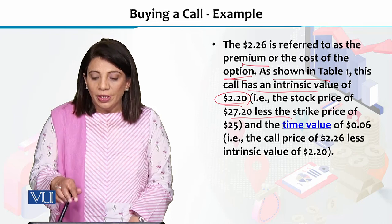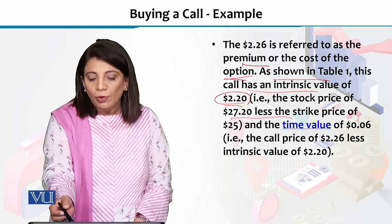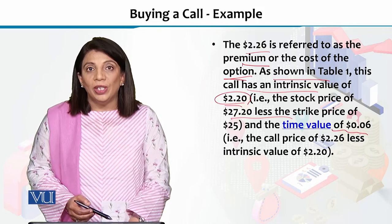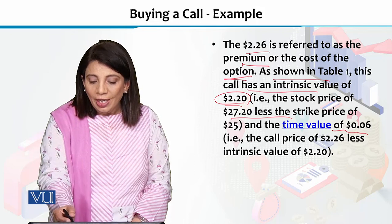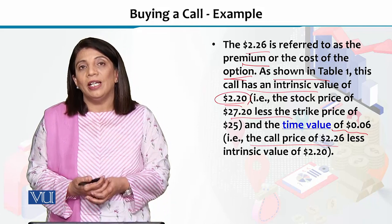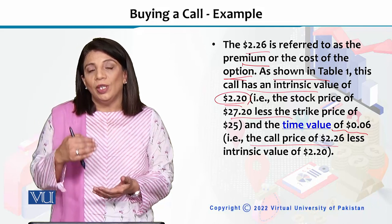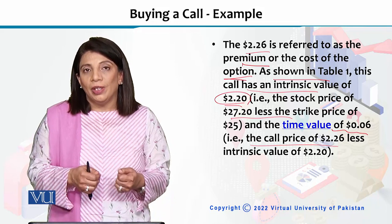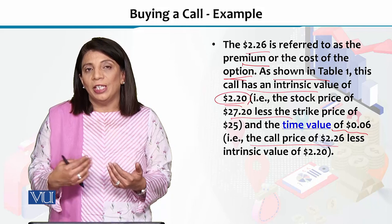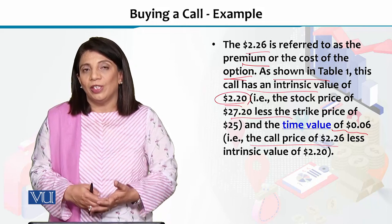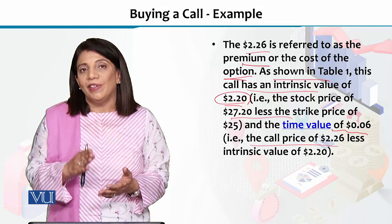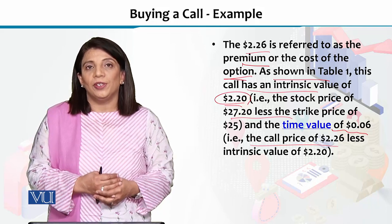When we pay 2.26 as the premium or the cost, we need to take into account the time value of 0.06 dollars also. آپ کی call price 2.26 میں سے intrinsic value subtract کر کے آپ کو مدِ نظر رکھنا پڑے گا کہ کتنی کیمت مزید آگے جائے گی تبھی profit ملے گا۔ آپ کو time value of money بھی consider کرنا پڑے گا — alternatives دیکھنے پڑتے ہیں۔ Volatility، time value، اور intrinsic value ان تمام چیزوں کو مدِ نظر رکھ کر investors call options یا put options کا فیصلہ کرتے ہیں۔